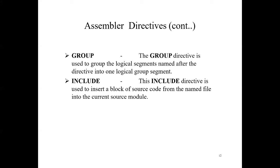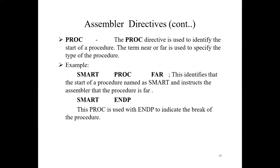Next is LENGTH — an operator to find the number of elements in a data item such as an array or a string. Variables are defined as: 'data_segment array DW 10 DUP (?)'. Next is LOCAL. When certain variables, constants, procedures, or labels are to be used in only one program module, they are declared local using the LOCAL directive. The same names declared local in one module can be reused in another program module by declaring them local again. Several variables can be declared local using a single statement.